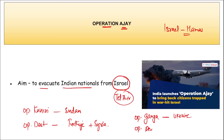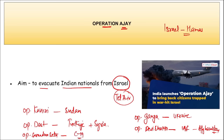Operation Devi Shakti was carried out by the Indian Air Force to bring back Indians safely from Afghanistan. And Operation Samudra Setu was launched by the Government of India during COVID-19 to help all Indian citizens stranded in foreign countries. So these are six operations: Operation Ajay for Israel, Cauvery for Sudan, Dost for Turkey and Syria, Samudra Setu during COVID-19, Ganga for Ukraine, and Devi Shakti by IAF for Afghanistan.